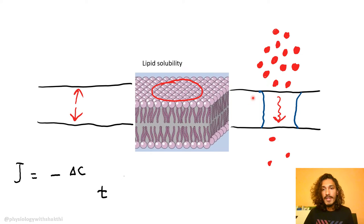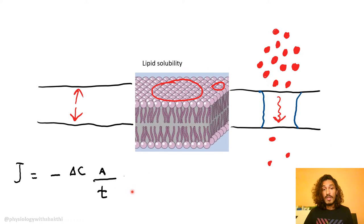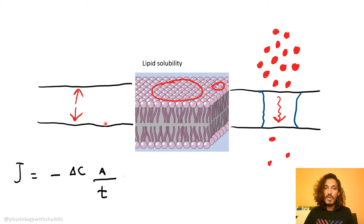Now let's talk about area. Consider the surface area of a pore — in one instance the pore is large, in another it is small. Greater the area, more will be the rate of diffusion, like the difference between a service road and an express highway. So diffusion rate is directly proportional to area. In summary: rate of diffusion is directly proportional to concentration gradient, directly proportional to area, and inversely proportional to membrane thickness.